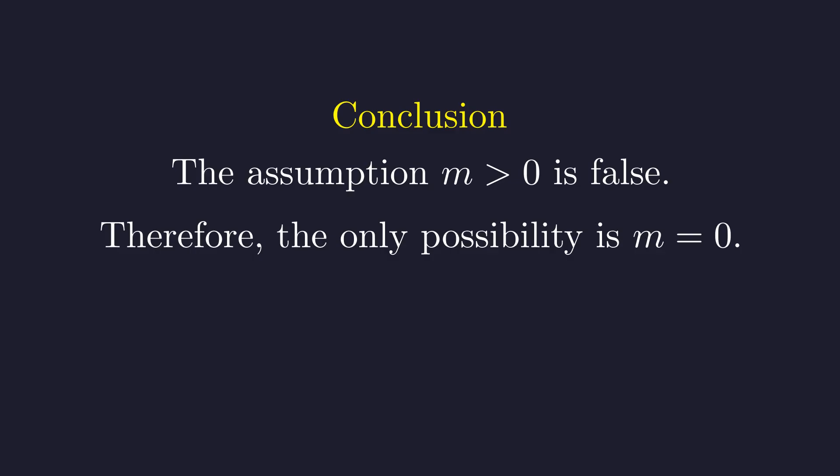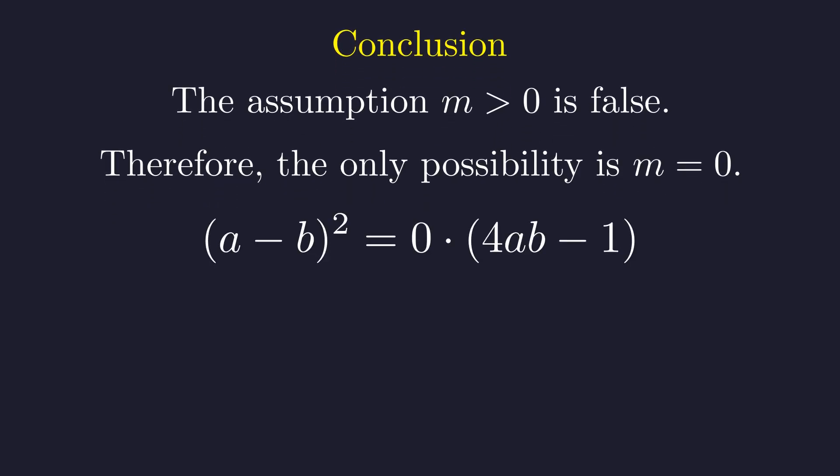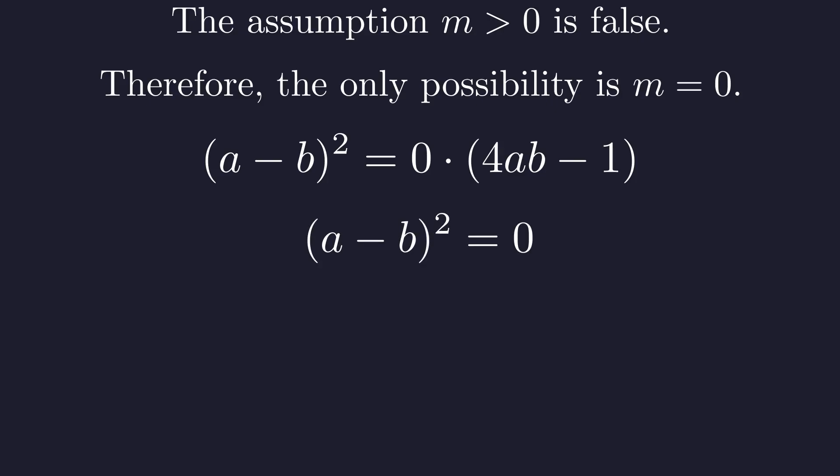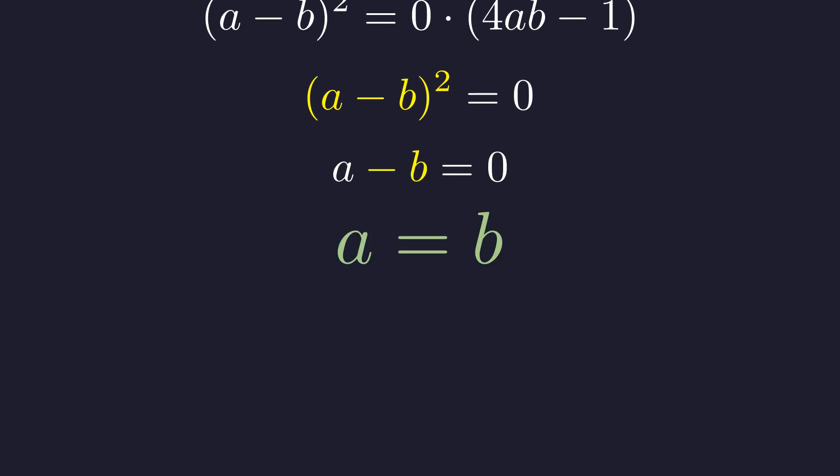The logical chain is now complete. The assumption that M is positive leads to a contradiction. The method of infinite descent has proven that M cannot be a positive integer. Since we established that M is a non-negative integer, the only remaining possibility is that M must be zero. Substituting M equals zero back into our key equation, the right side becomes zero. As before, if the square of a number is zero, the number itself must be zero. We take the square root of both sides. This simplifies to A minus B equals zero. Finally, we add B to both sides to solve for A. This forces the conclusion that A must equal B.